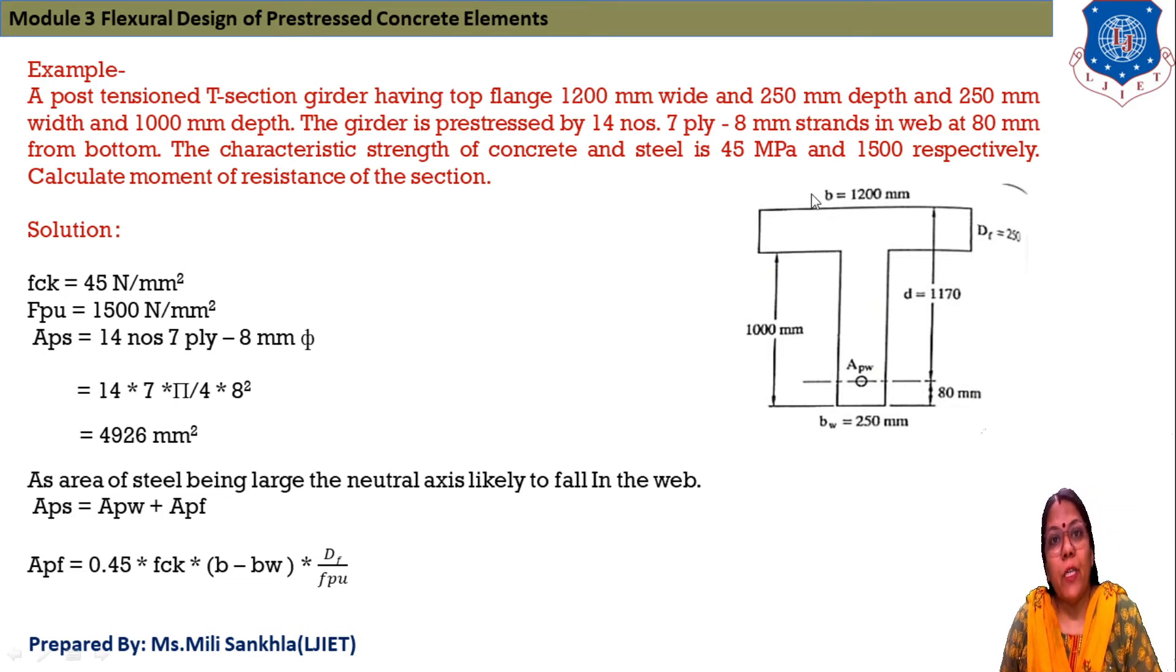Now FCK is 45, characteristic strength of steel FPU is 1500 N/mm². APS, area of pre-stressing steel, is 14 number 7 × π/4 × 8², which equals 4926 mm².